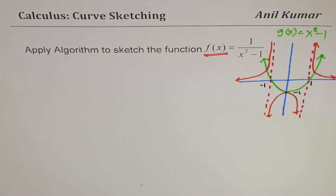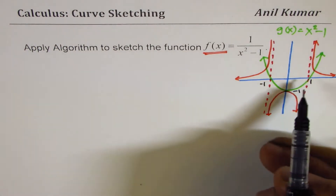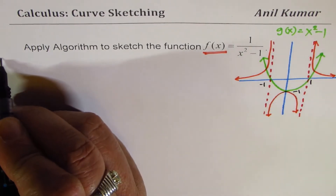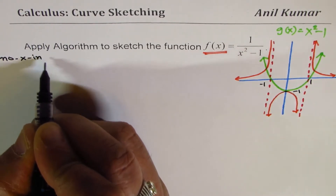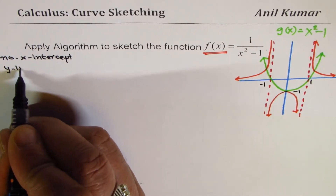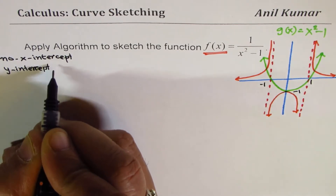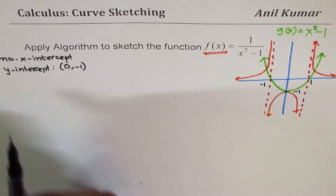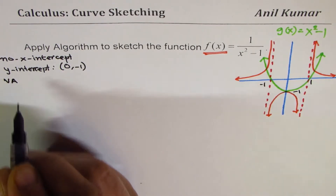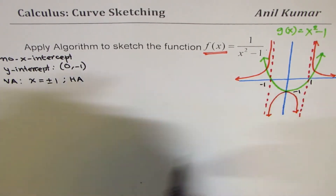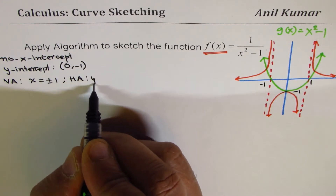Now let's use the algorithm to provide all solutions. It will not have any x-intercept clearly, so it has no x-intercept. The y-intercept is at minus 1, so you could write this point as (0, −1). We have two vertical asymptotes at x equals plus and minus 1, and we have a horizontal asymptote which is y equals 0.